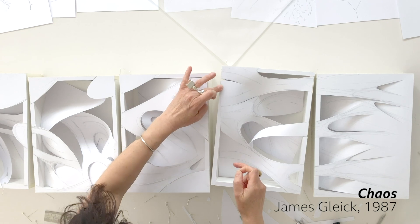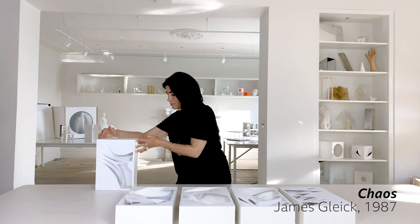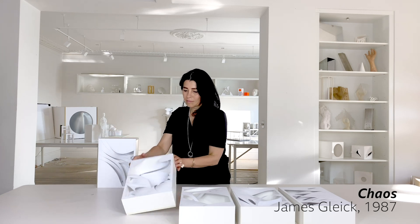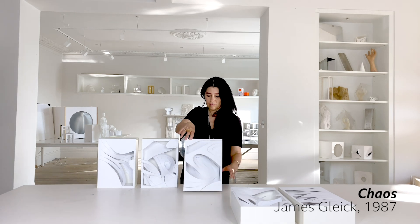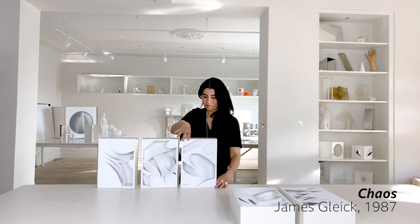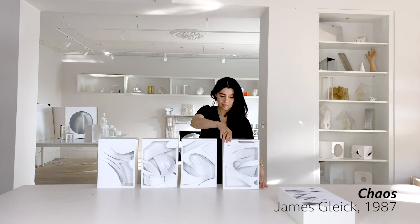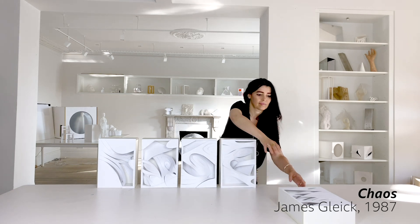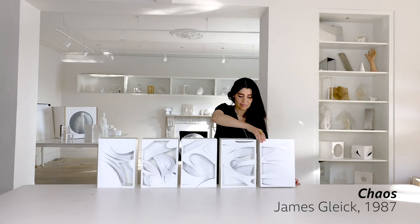Clouds are not spheres, mountains are not cones, lightning does not travel in a straight line. The new geometry mirrors a universe that is rough, not rounded — scabrous, not smooth. It's a geometry of the pitted, pocked and broken up, the twisted, tangled and intertwined. There were forms in nature, not visible forms, but shapes inherent in the fabric of motion, waiting to be revealed.